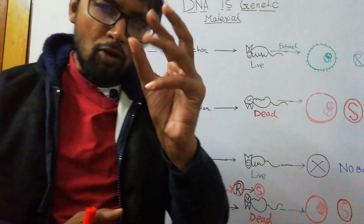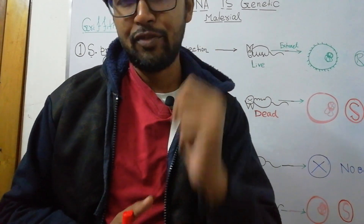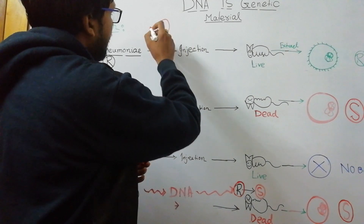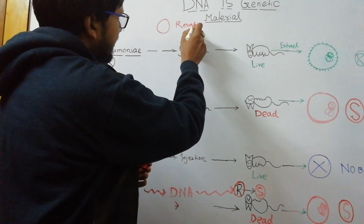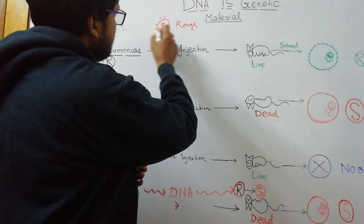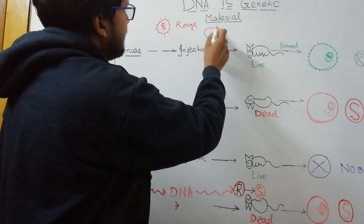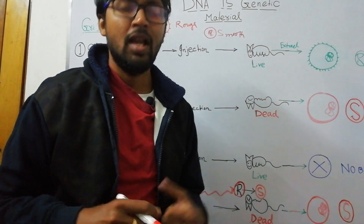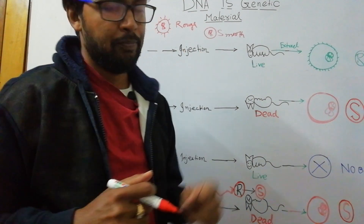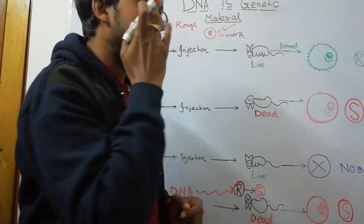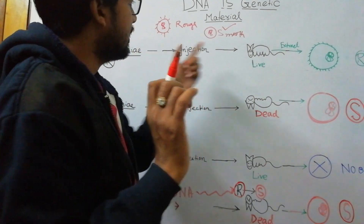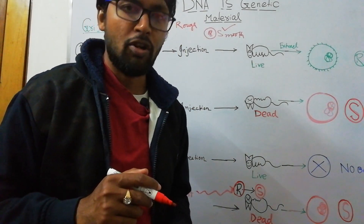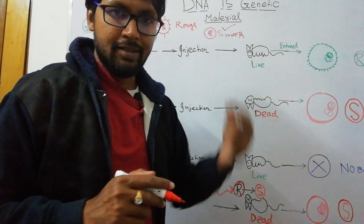In the Griffith experiment, Streptococcus pneumoniae is the bacteria used, and it has two strains: R strain and S strain. R is for rough — the bacterial surface is rough. S strain is smooth. Out of these two strains, the smooth strain is responsible for pneumonia in mammals, especially in mice, and it caused death. The rough strain is avirulent — it is not virulent.